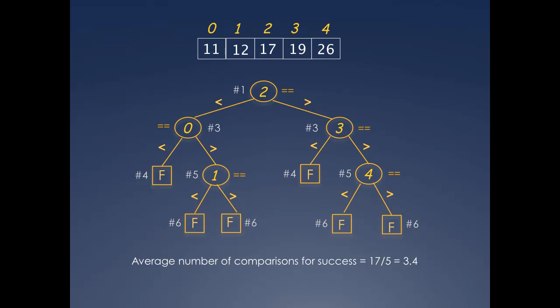Earlier, we computed the average number of comparisons for successful search to be 17 divided by 5. We can rewrite the average computation to factor in these search probabilities by first breaking up the numerator into separate terms for the number of comparisons for success nodes, and then rewriting the denominator 5 as the multiplier 1 over 5 for each term. So we can rethink the average as a sum of products. Specifically, it is a sum of the product of the number of comparisons for success at each node, or a spot in the array, with the probability of landing at that node.